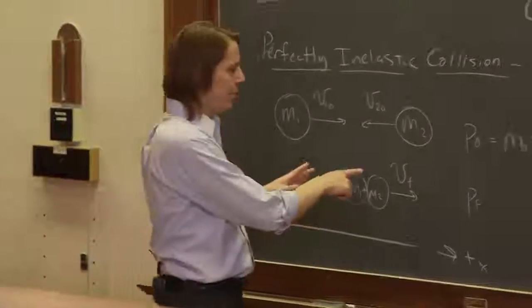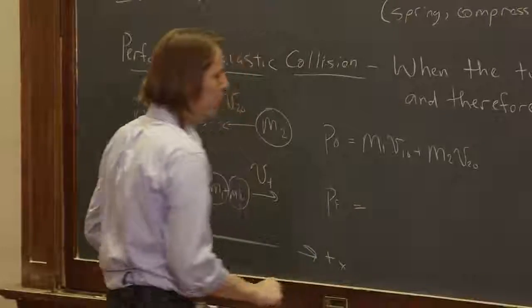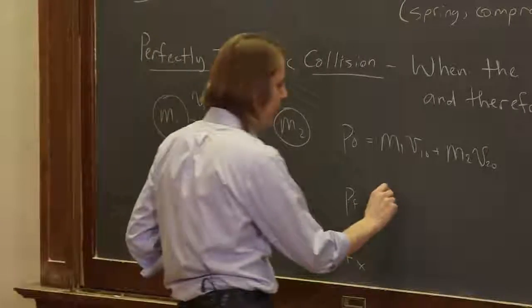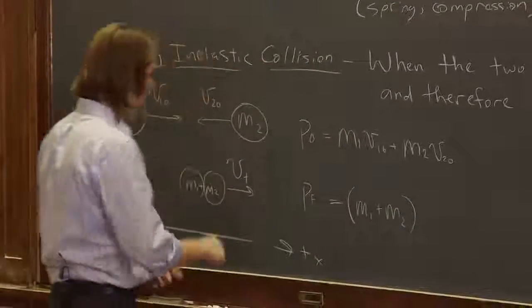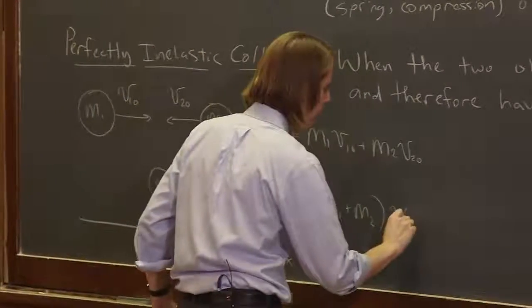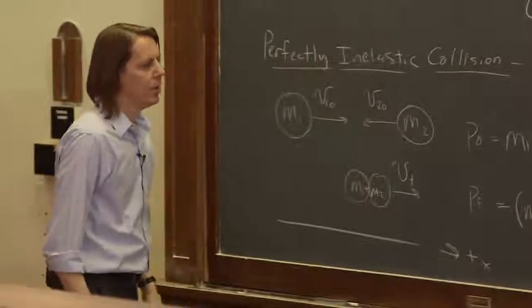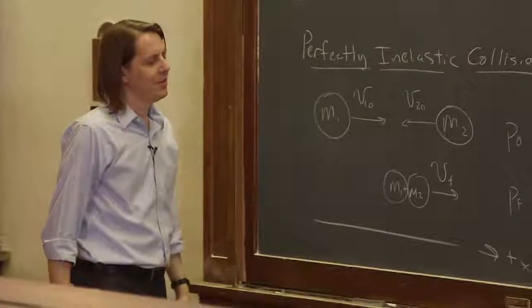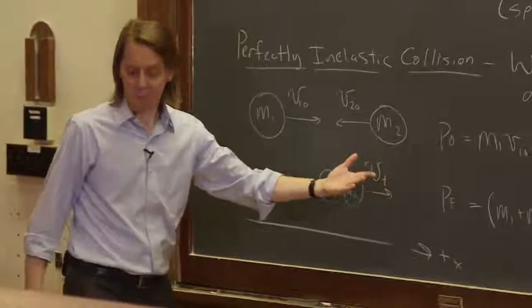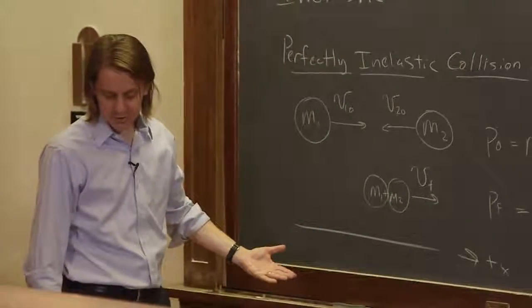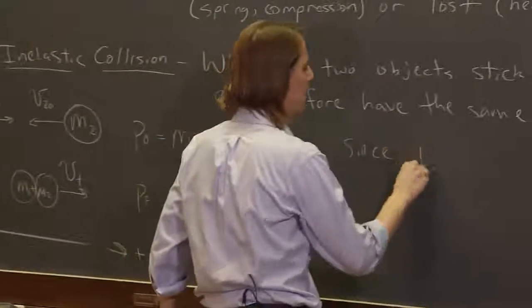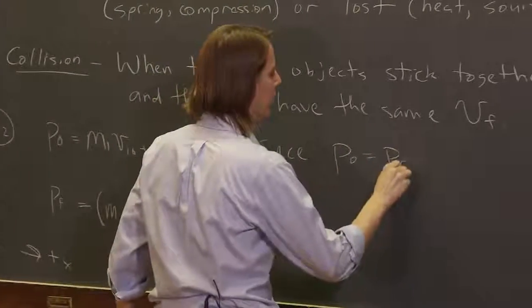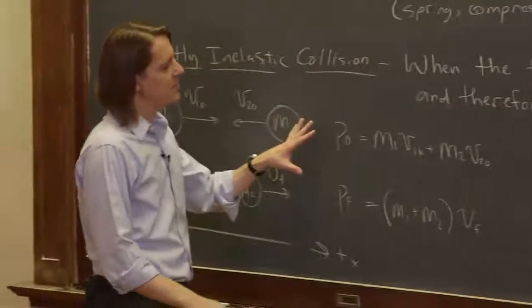The final momentum would just be what? It would be the sum, M1 plus M2, times V final. There you go. And we know that the initial and the final momentum have to be the same because we have conservation of momentum. So we say since P knot equals P final, we just equate these.